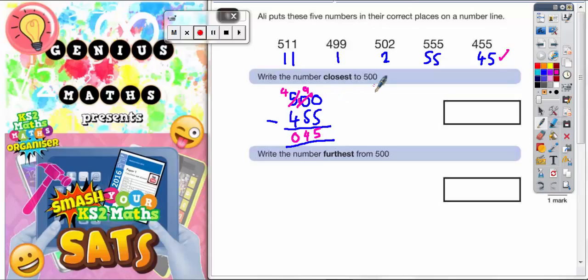So the number closest to 500 is going to be the one that's got the smallest gap. And the one with the smallest gap is the one that's only one away, which is 499. So 499 is closest to 500.